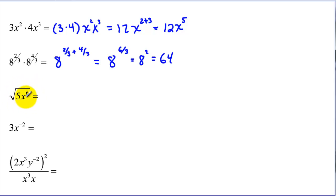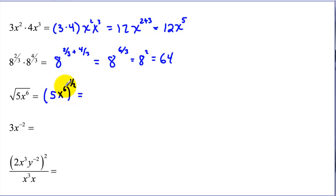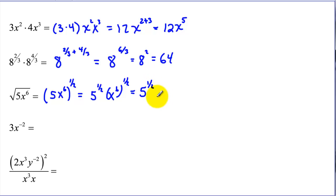Here we'll use fractional exponents. We rewrite the square root as a fractional exponent: the square root is the same as the one-half power. We have a rule where an exponent outside parentheses must apply to both terms inside. The one-half exponent applies to the 5 and to x to the sixth. For the power to a power, we multiply: one-half times 6 gives x cubed. Since the 5 is irrational, we put it back into radical format, giving us x cubed times the radical of 5.